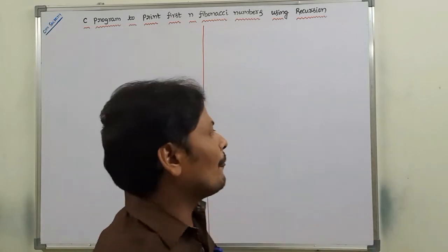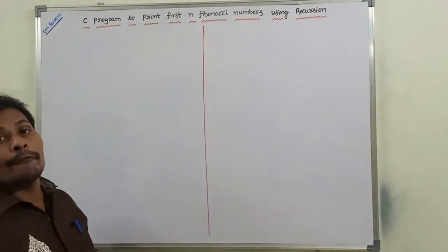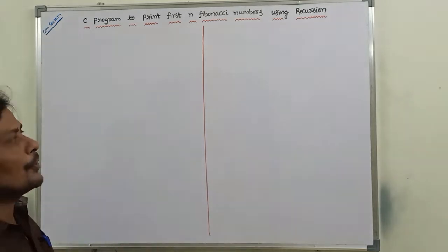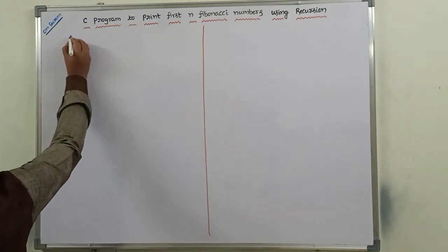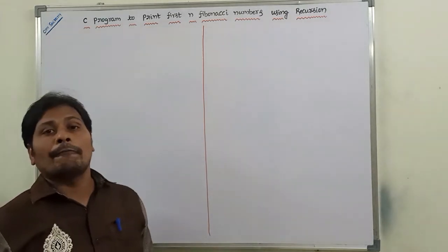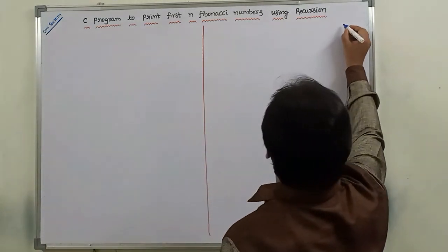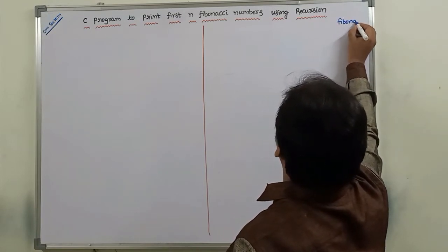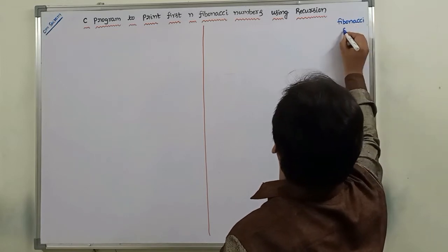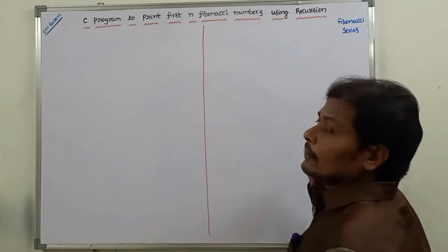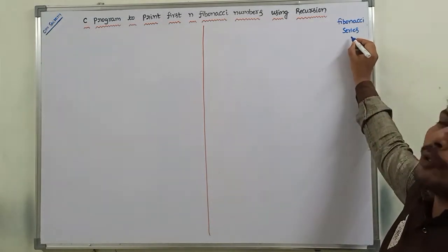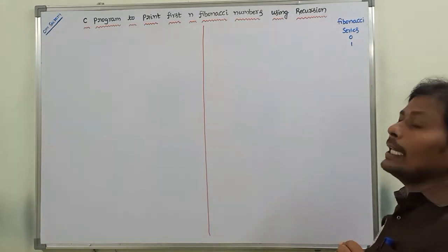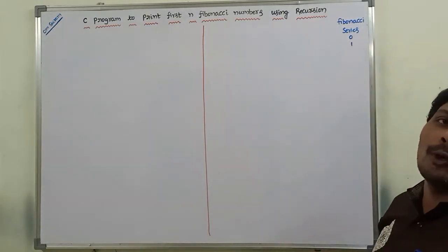Now we can go through how to print the first n Fibonacci numbers using recursion. First of all, what is a Fibonacci series? A Fibonacci series starts with the first two Fibonacci numbers: 0 and 1. The next Fibonacci number is obtained by adding these two.